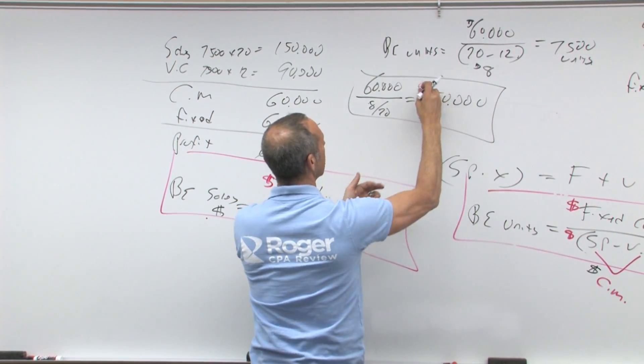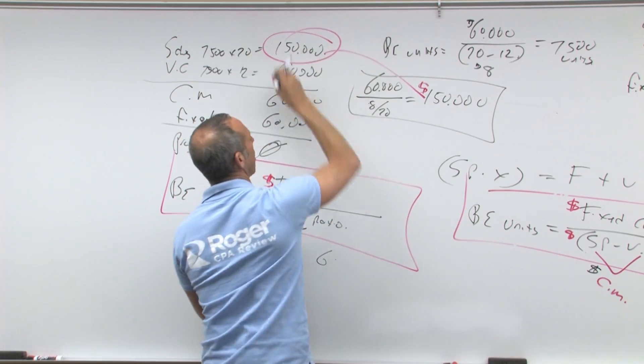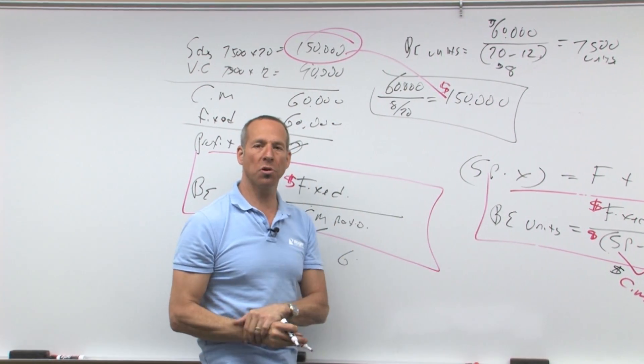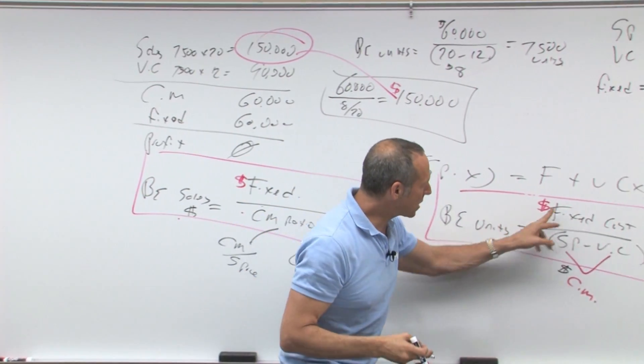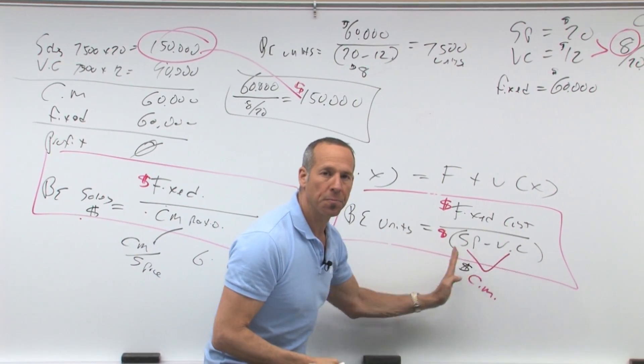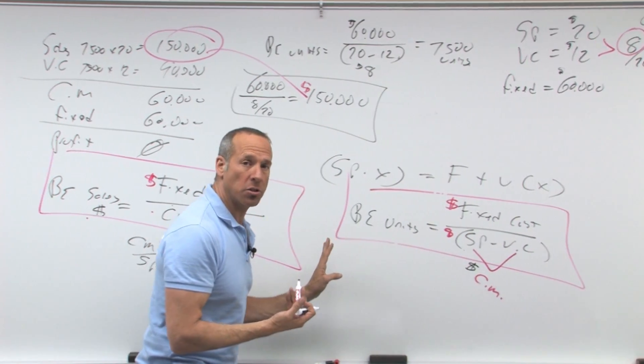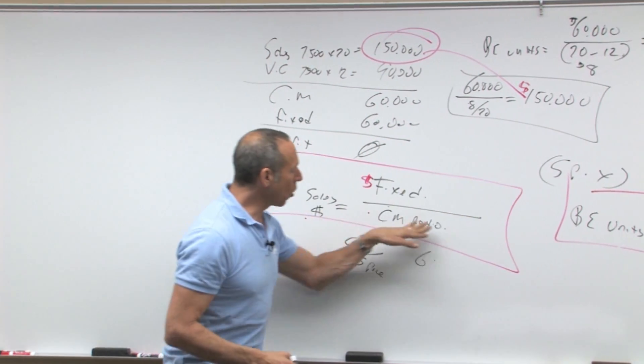Boom, boom, boom. Notice that gives me breakeven in sales dollars. Two important formulas, breakeven in units, breakeven in sales dollars. Breakeven in units is fixed costs over CM. Breakeven in sales dollars is what? Fixed costs over CM ratio.